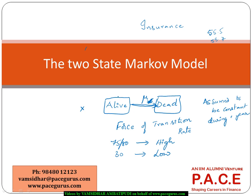That's why the force of transition is based on age x, and it is also called the force of mortality — the chance of dying — or even the hazard rate.